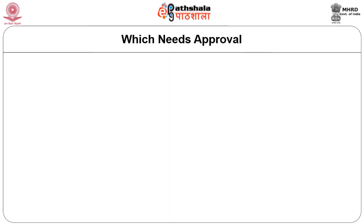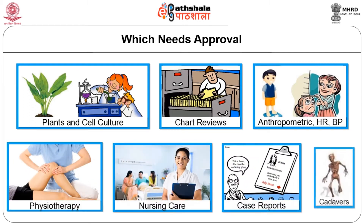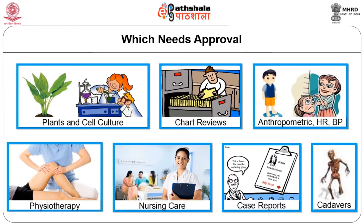Many people think that unless human beings are directly involved, you do not have to take ethics committee approval — when looking at biological material or data, they think there is no need for ethics approval. But the requirement now is that anything related to human research — even if you use plants and cell culture — if it is related to human research, you have to have ethics committee approval. Even simple studies like taking blood pressure, height, or weight — as long as a human being is involved — require ethics committee approval.